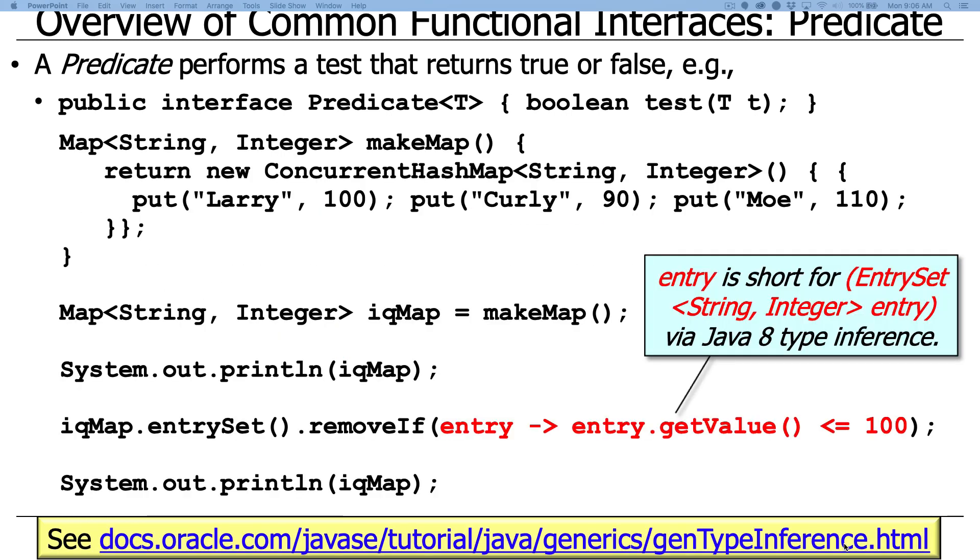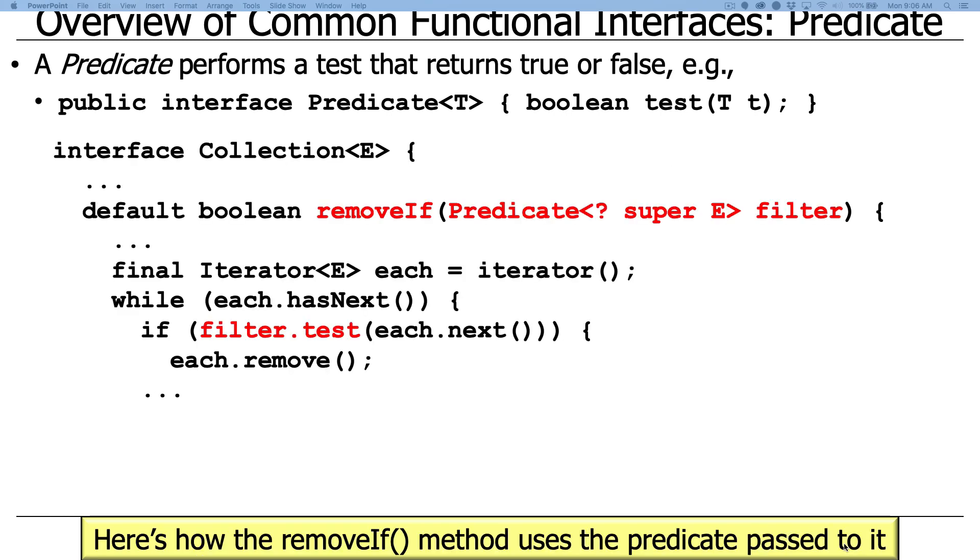Now, so that's how you call the... That's how you pass a lambda expression to removeIf. Let's take a look at how removeIf is actually defined. So now we're kind of looking at the implementation. And the implementation is defined in the collection interface. And one of the things you'll note with Java 8, which is a little different from earlier versions of Java, is that interfaces can now have default method implementations.